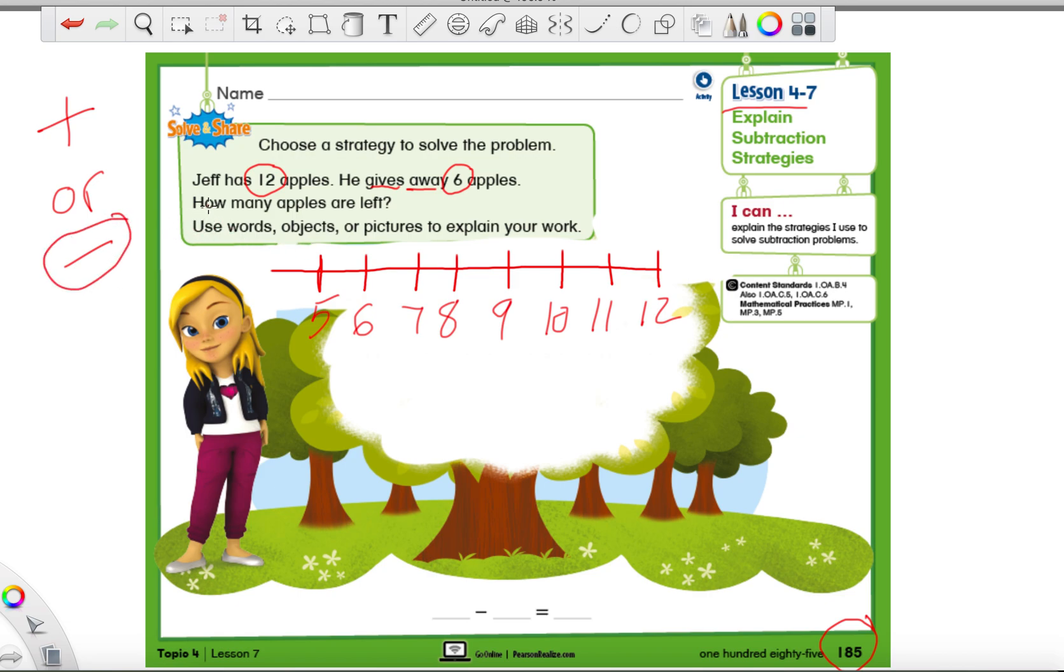And then the last sentence says, how many apples are left? So, when they say how many are left, that's another hint that we're going to be using subtraction. And here, they're saying, make sure you use words, objects, or pictures to help explain your work. If you would like to draw a number line, feel free to on your page. I don't know how much room there really is, though. But if you have one on your desk, you can just use that one, too. Not a big deal.